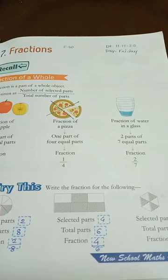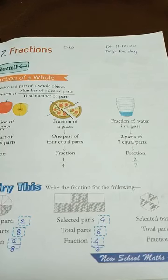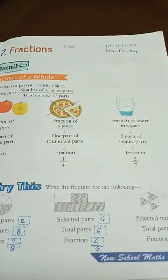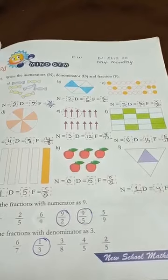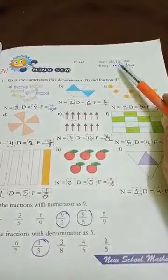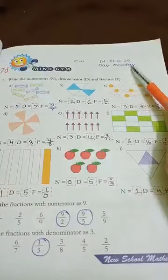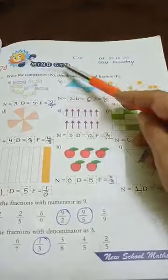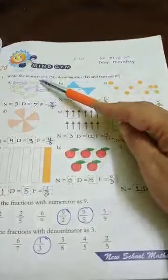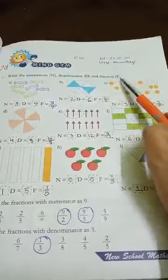I hope that what I told you in the previous period was well understood by you. So now let's start — open page number 130. Please take your pencil, write CW and today's date, 21 December 2020, Monday. 7D mind gym. Write the numerator N, denominator D, and fraction F.